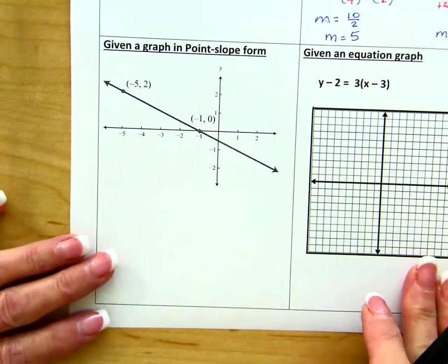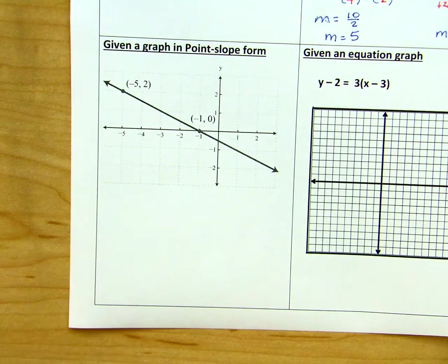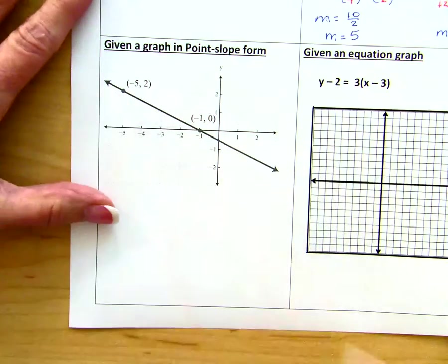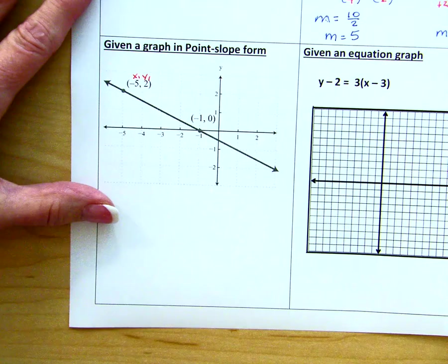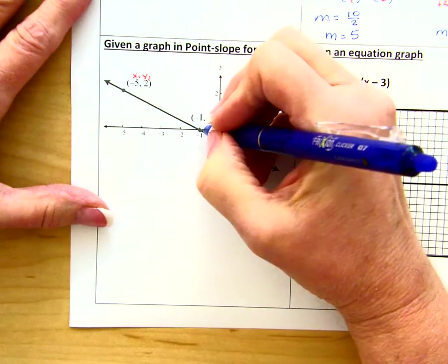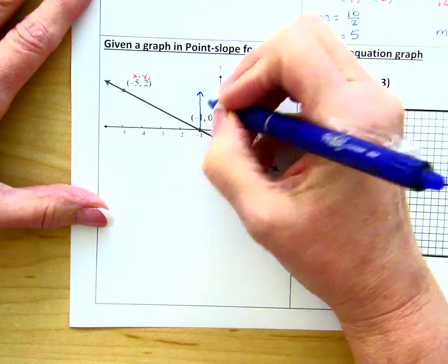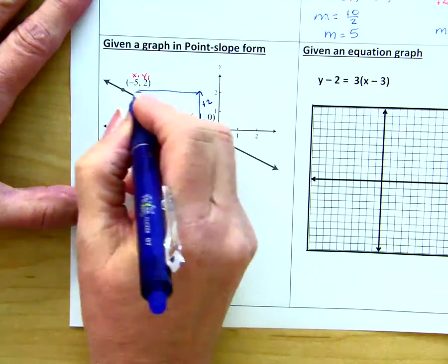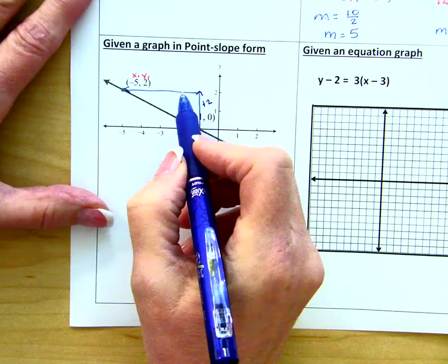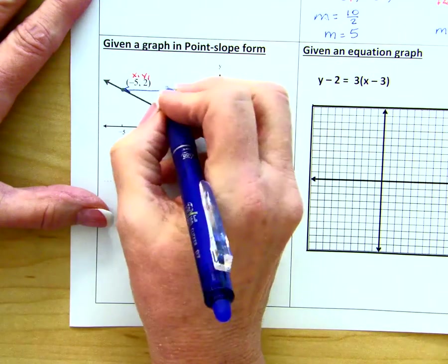Now they have given us a graph. In this graph, we have these two points. And I'm going to call this x sub 1, y sub 1. And instead of using the formula, I'm going to count up 2. So my change in y is going to be a positive 2. And my change in x is going to be 1, 2, 3, 4. Negative 4.